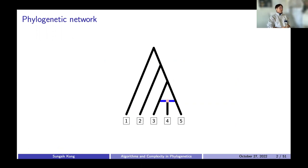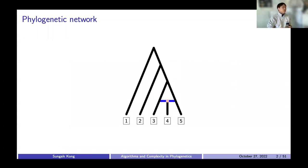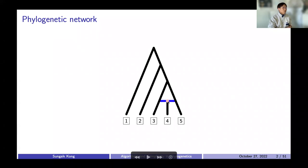I'm interested in studying phylogenetic networks because trees often overlook some important biological processes like hybridization, where two species interbreed and create a novel lineage or novel species. The trees and the networks are similar in that they both are composed of a set of nodes and the branches that connect those nodes together. But networks are distinguished from trees by a reticulation structure created by a reticulation node that has in-degree two and out-degree one, denoting a hybridization event.